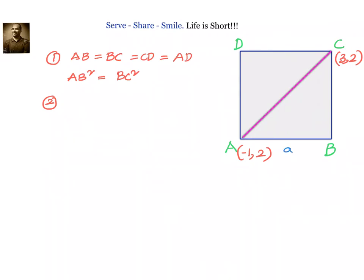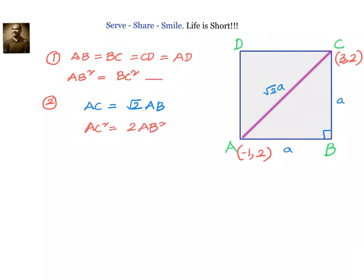If the side length is 'a', then the diagonal is √2 × a by Pythagoras theorem. So diagonal AC = √2 × AB. Squaring both sides gives us AC² = 2 × AB². These two equations are enough to solve the problem — we need to find two variables, the x-coordinate and y-coordinate of the unknown vertices. Condition 1: all sides equal. Condition 2: square of diagonal = 2 times square of the side.